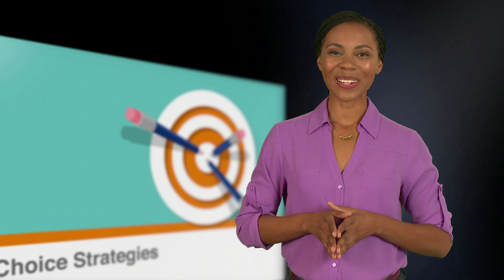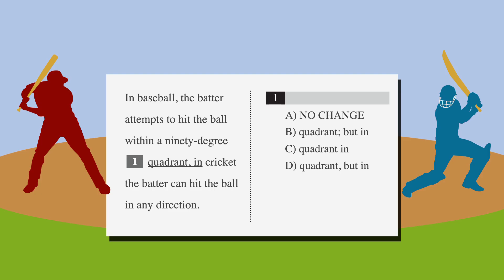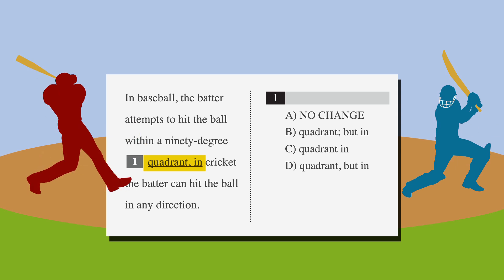Now let's take a look at a couple of sample questions. Here's a short excerpt from a passage about baseball and cricket. In baseball, the batter attempts to hit the ball within a 90-degree quadrant. In cricket, the batter can hit the ball in any direction. The underlined portion — 'quadrant, n' — is the portion of the sentence rewritten in our answer choices. We know this sentence needs a correction because, left as it is, it's a run-on sentence. So we want to go through the answer choices to find the best alternative.